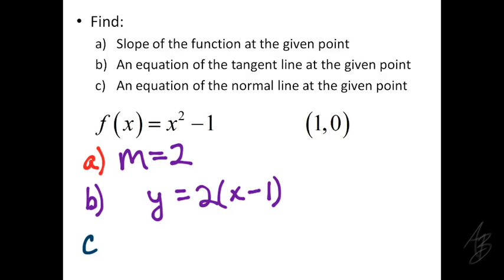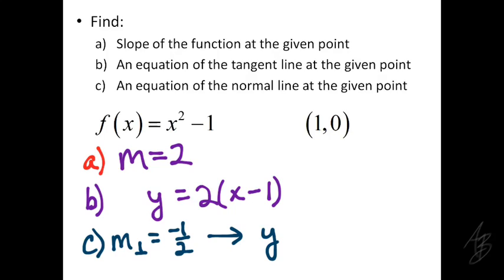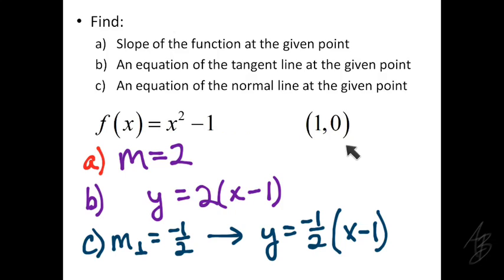In part c, we write the equation of the normal line at the given point. The normal line also goes through the same point, so we just need the slope of the perpendicular line to the tangent. That's the opposite reciprocal of 2, which is negative one half. So the equation is y equals negative one half times the quantity x minus 1, and this is the equation of the normal line to x squared minus 1 at the point (1, 0).